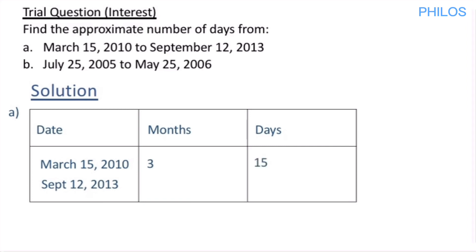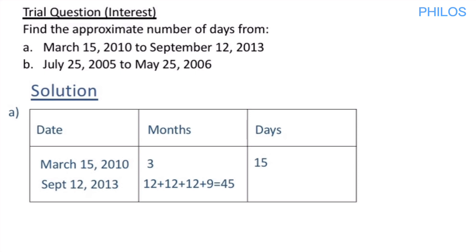Now for September: check the number of months from January 2010 to September 2013. In 2010 we have 12 months, then 2011 is another 12 months, 2012 is 12 months, and in 2013 up to September is 9 months. Adding those: 12 + 12 + 12 + 9 = 45 months. So from January 2010 to September 2013 is 45 months. The day for September is 12, so we write 12 under days.